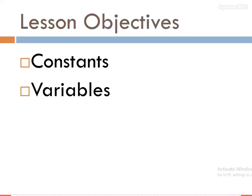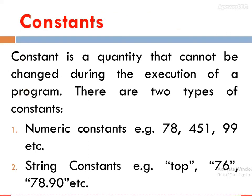I'll be telling you the meaning of variables and how they can be used in the BASIC program. So what are constants? They are quantities that cannot be changed during the execution of the program. There are two types of constants: numeric constants and string constants.